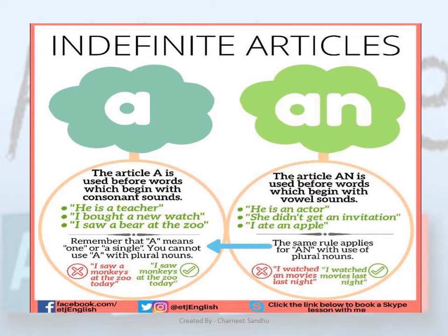The indefinite article 'AN' is used before words which begin with a vowel or vowel sound. Look at these examples: 'He is an actor' — the word 'actor' is a noun here and it begins with A, which is a vowel. 'She didn't get an invitation.' 'I ate an apple.'